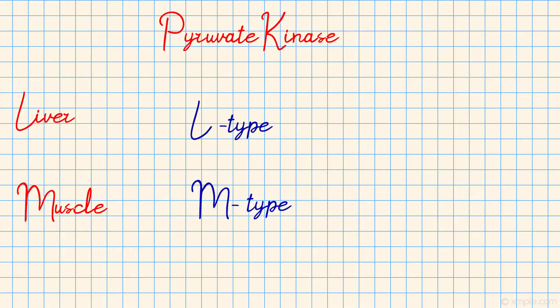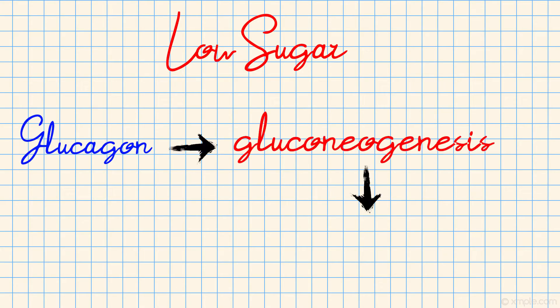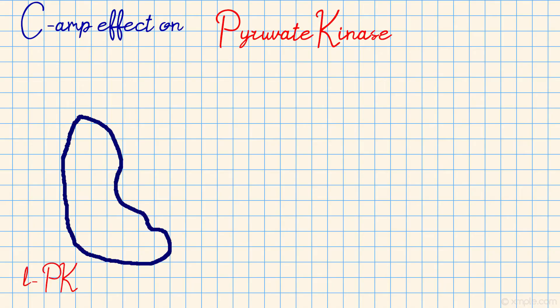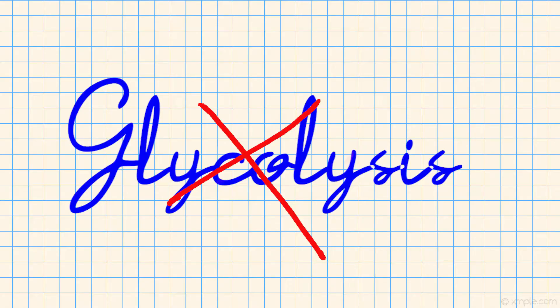Lastly, let's look at pyruvate kinase. Pyruvate kinase in the liver, like within the muscle, is also allosterically inhibited when there is an increase in ATP. However, the pyruvate kinase present in the liver is different from that in the muscle because they are isozymes — brothers from another mother. When there is a low blood sugar level, glucagon is produced to promote catabolic activity. This triggers the cyclic AMP cascade, which ultimately results in pyruvate kinase within the liver being phosphorylated, reducing its affinity to convert phosphoenolpyruvate to pyruvate, thereby inhibiting glycolysis.